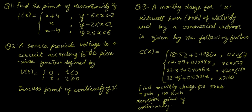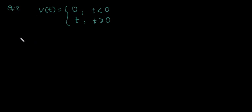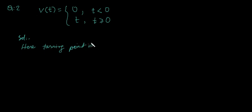Let us take our second question. A source provides voltage to a circuit according to the piecewise function v(t), defined by 0 for t less than 0, and t for t greater than or equal to 0. We need to discuss the point of continuity of v. This function is defined by two pieces, and to the left and right of t equals 0 the function is defined by different formulas. So the turning point is t equals 0.